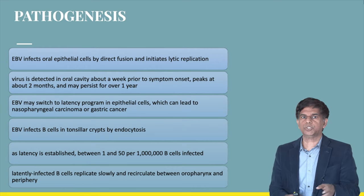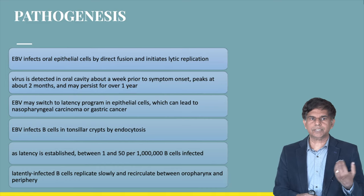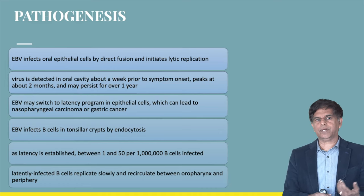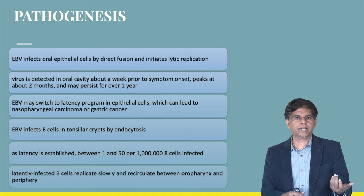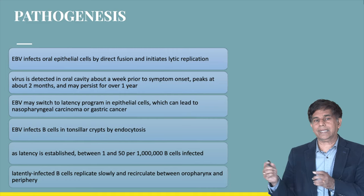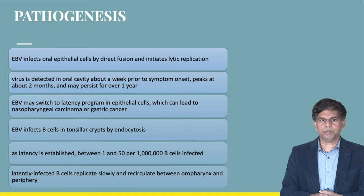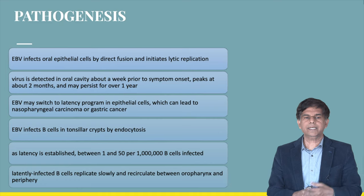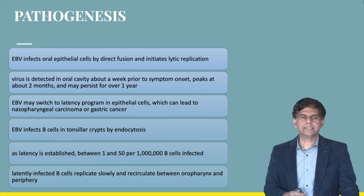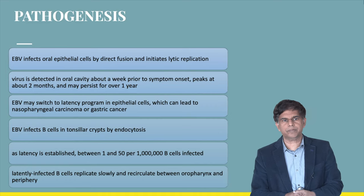In terms of pathogenesis, EBV first infects oral epithelial cells by direct fusion and initiates lytic replication. It is detectable in the oral cavity about one week prior to symptom onset, peaks at about two months, and may persist over one year. EBV may switch to a latency program in epithelial cells, which can lead to nasopharyngeal or gastric carcinoma. EBV also infects B cells in the tonsillar crypts by endocytosis, with between 1 and 50 per 100,000 B cells infected at latency.